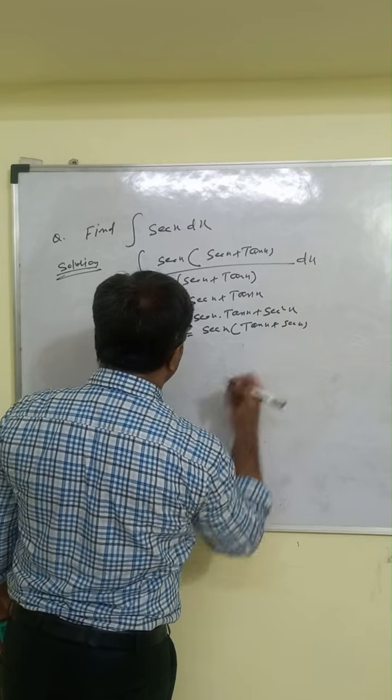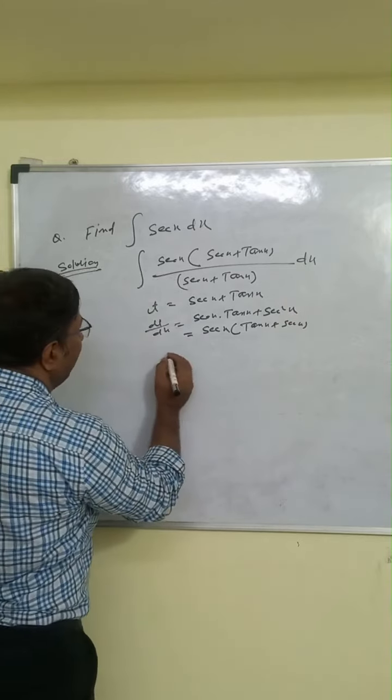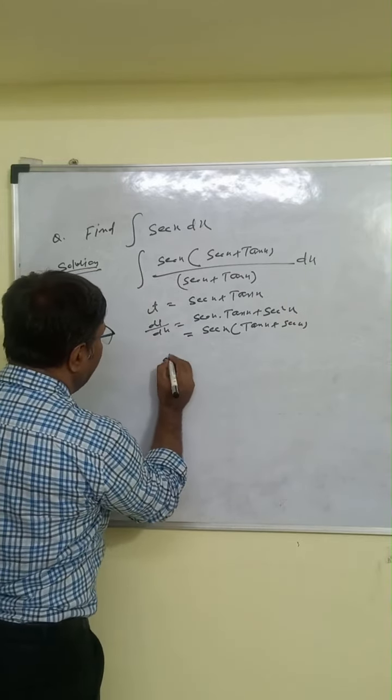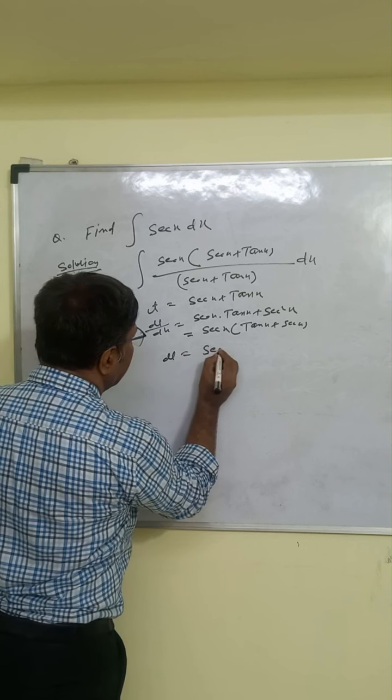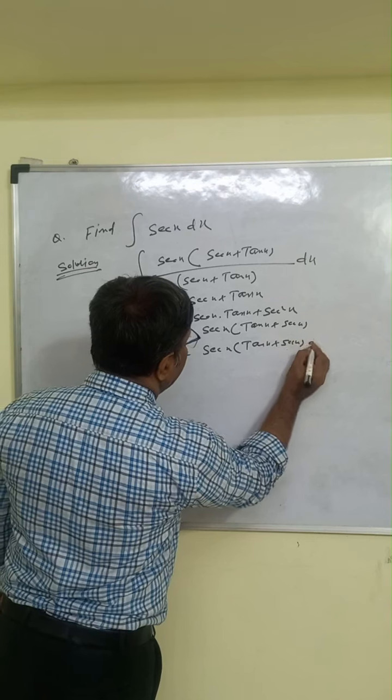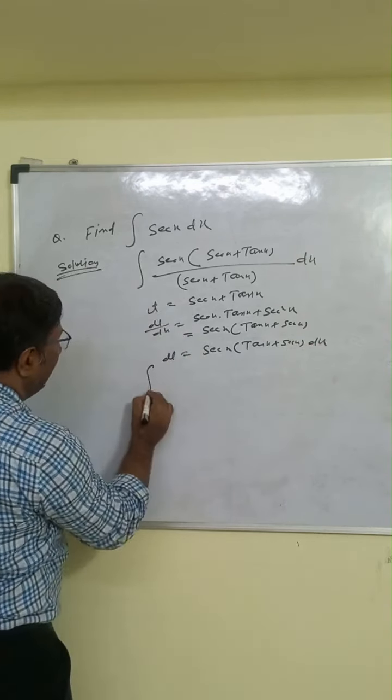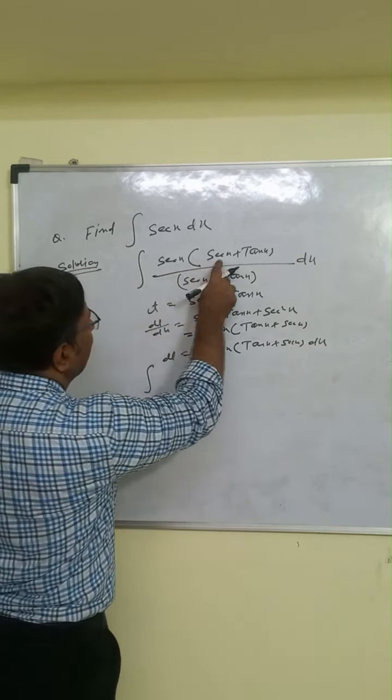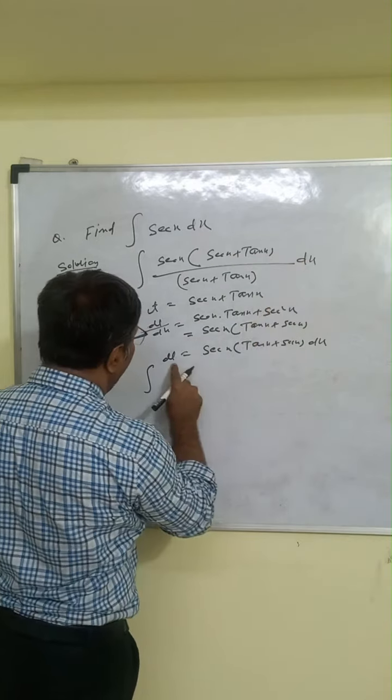So we can write here dt equal to sec x into tan x plus sec x dx. Here you see sec x into sec x plus tan x dx is dt.